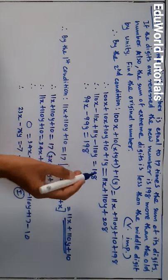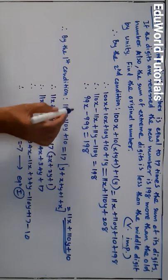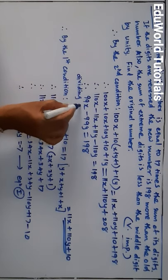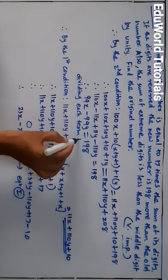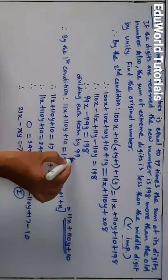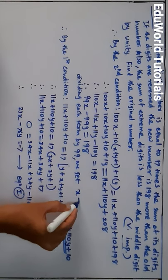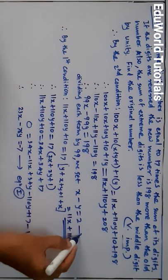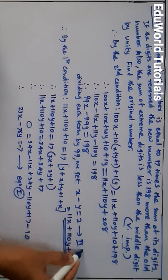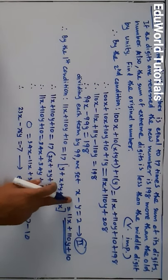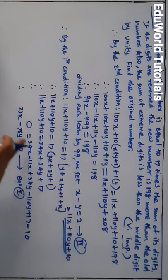Dividing each term by 99, we get x minus y = 2. This is equation 2. The first equation we got earlier was 23x minus 76y = minus 7. So we have two equations and we will have to solve them to get the values of x and y.